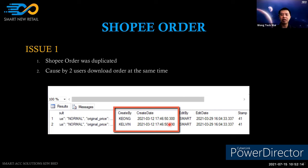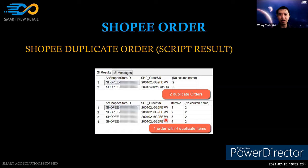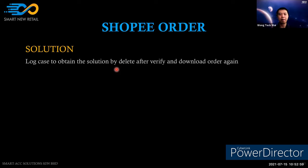A script is provided to check for duplicate orders in the database. Once the duplicated rows are identified, you provide the information in a log case, and then the duplicate record is deleted and the order is downloaded again. It is preferred to log the case first so we can verify whether it is the same issue or a different one. If urgent, you can delete the record after taking a backup.